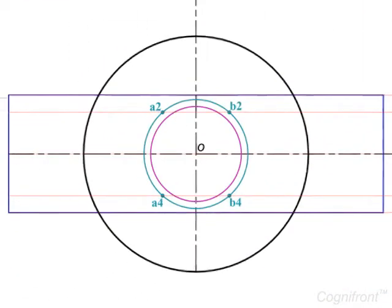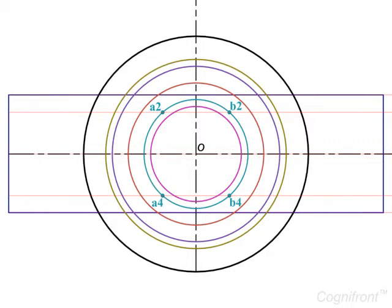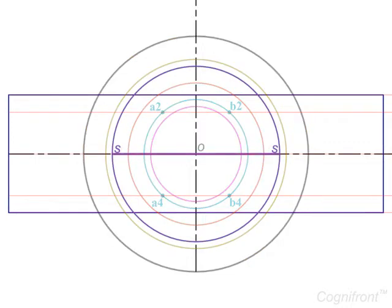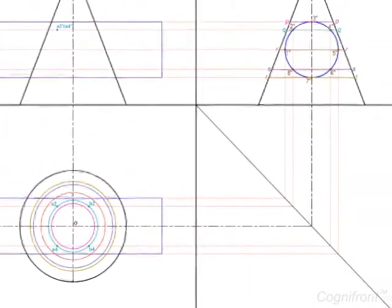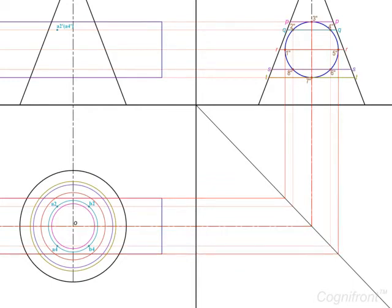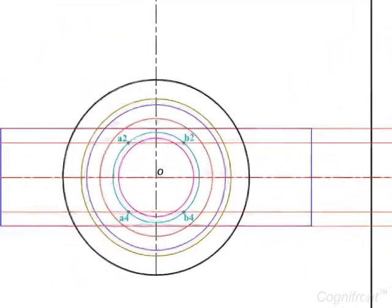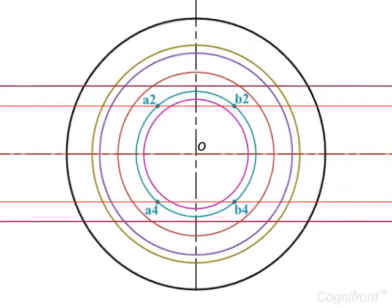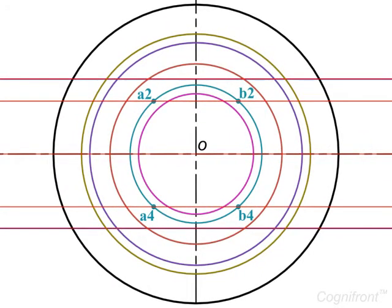In the top view, draw circles by taking the lengths RR, SS, and TT as diameters. Now project the points 1-double-dash, 3-double-dash, 5-double-dash, 6-double-dash, 7-double-dash, and 8-double-dash onto the top view to meet the respective circles at a1, a3, a5, a6, a7, and a8.